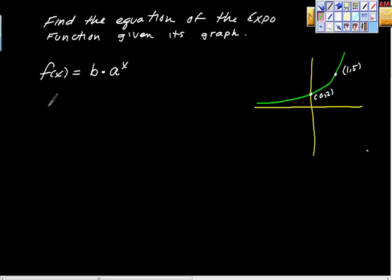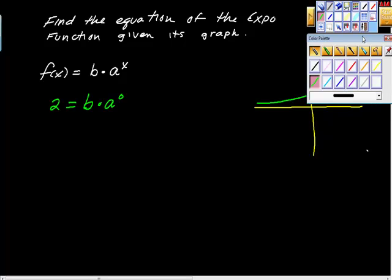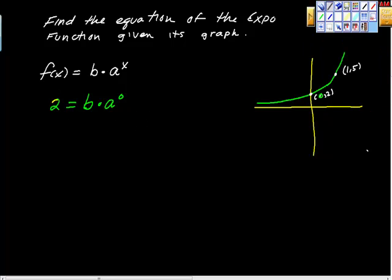So I guess the first thing I would do is, well, look at this for a second. It says here that when x is 0, y is 2, doesn't it? So look at this, I can just rewrite that: when f of x, the height is 2, then b times a to the 0, right? This 0 is this 0 right here, right? And this 2 is this 2 right here.